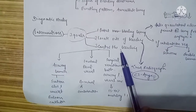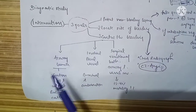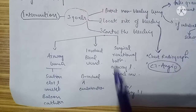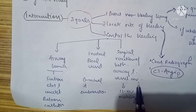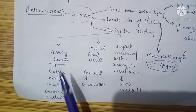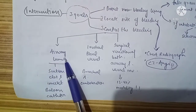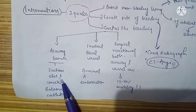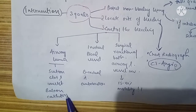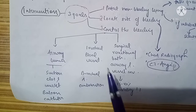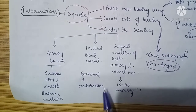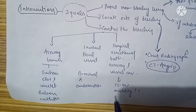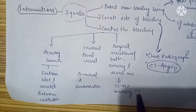To control the bleeding, we have three measures: we can go through the airway lumen, through the involved blood vessel, or through surgical resection of both the airway and vessel involved. Via the airway lumen, we suction the clot and insert a balloon catheter. For the blood vessel approach, we can perform bronchial artery embolization to prevent further hemoptysis.